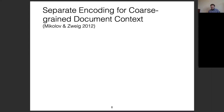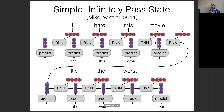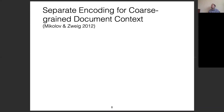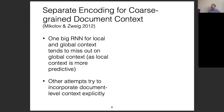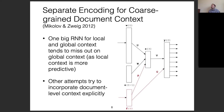One problem with this is that it can be difficult to pass information from sentence to sentence, because in this long linear chain there are many steps between the beginning and the end. So it is also common to have a separate encoding for coarse-grained document context in addition to the fine-grained encoding of a single sentence. This was first introduced by Mikolov and Zweig in 2012.